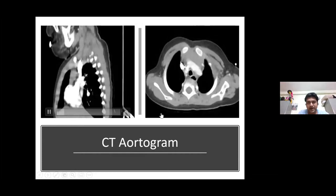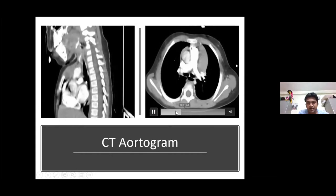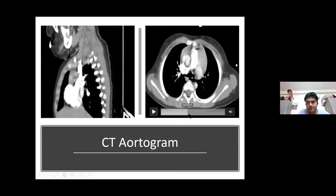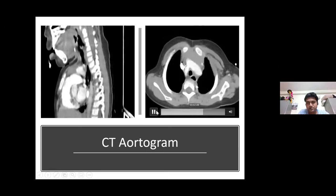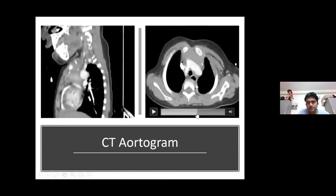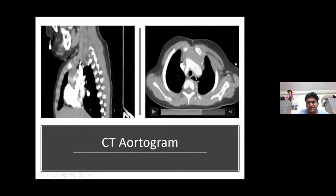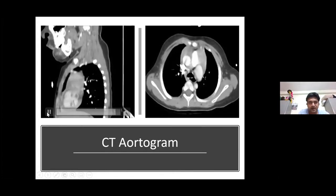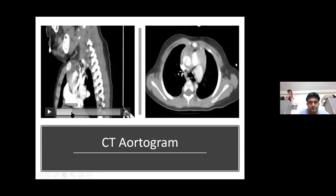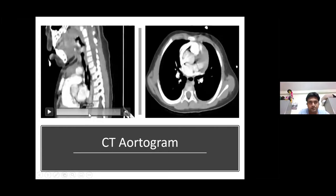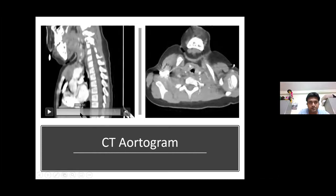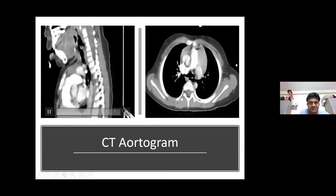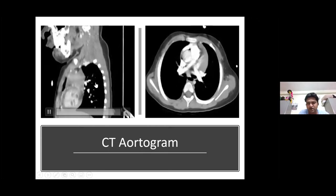So we got a CT scan done. As you can see here — this is the left arch, and you can see there is a small continuation. So it is probably a very tight coarctation. Here also, you can see there is a small continuation — so probably it is a very tight coarctation and probably it is not an interrupted aortic arch.